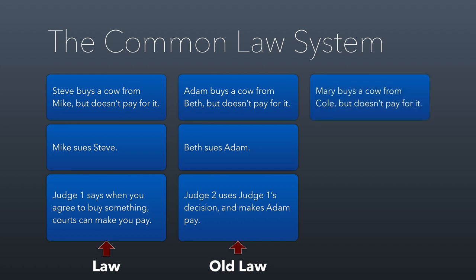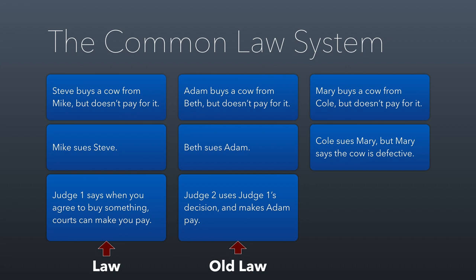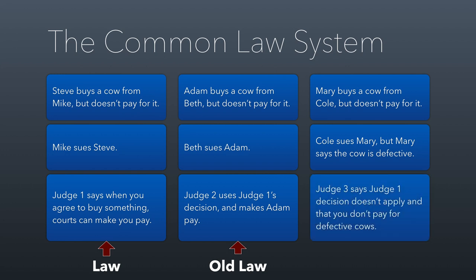Now let's say Mary buys a cow from Cole but doesn't pay for it, so Cole sues Mary — but Mary comes to court with a defense. Mary says she's not paying because the cow is defective. Judge Three looks back at the decision made by Judge One and says that in Mike versus Steve, the cow being bought was a good cow, but here Mary is buying a defective cow. So Judge Three won't make Mary pay, creating a new rule that you don't have to pay for defective cows. This is how common law is built up over time — we look at old law to inform what's fair, but if we confront a new circumstance, as a judge we can write new law.